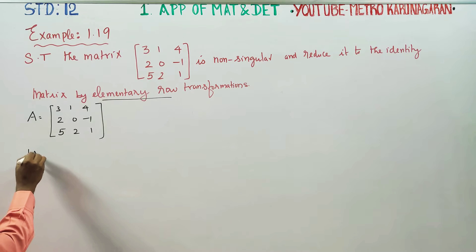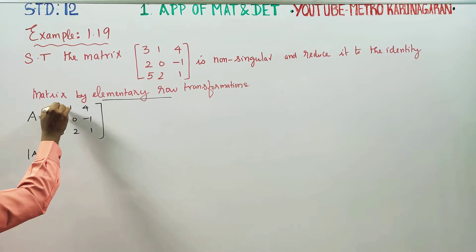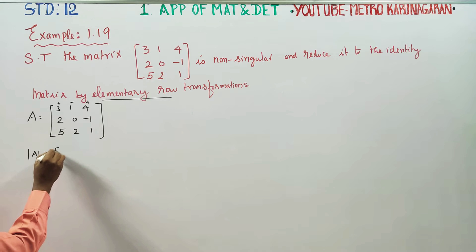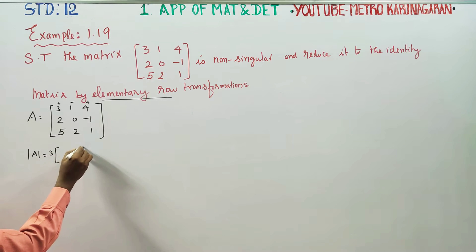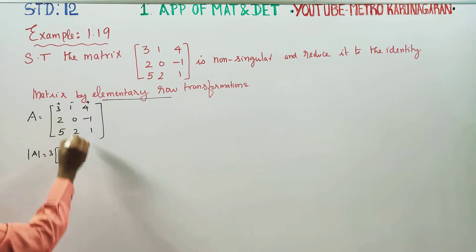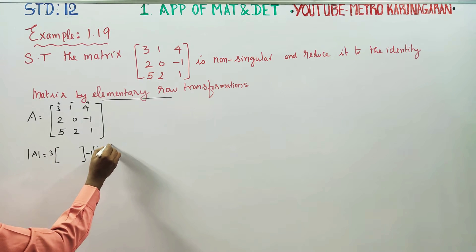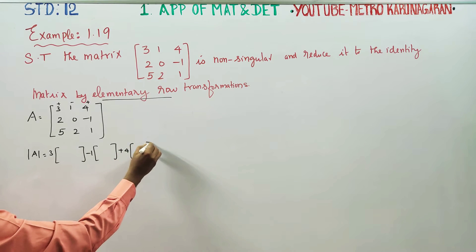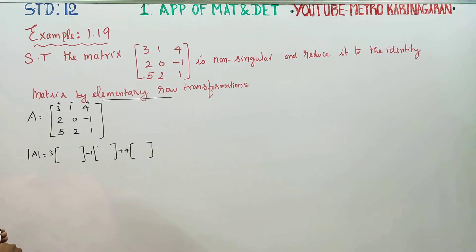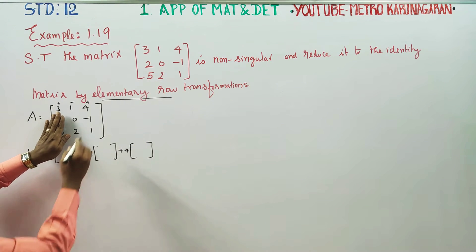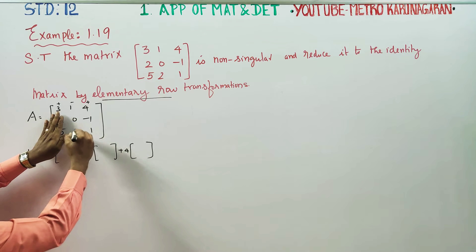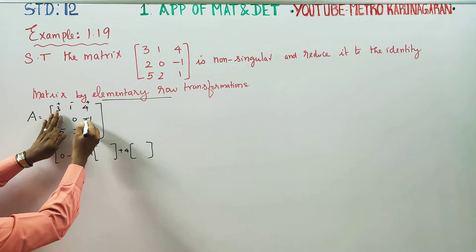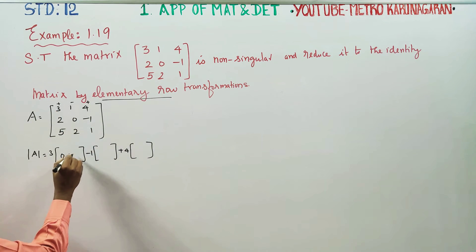To determine this, you have to find the determinant of A. Using the plus, minus, plus sign pattern for cofactor expansion: 3 times (2 × (minus 1) minus (minus 1) × 2), which gives 3 times (minus 2 plus 2).